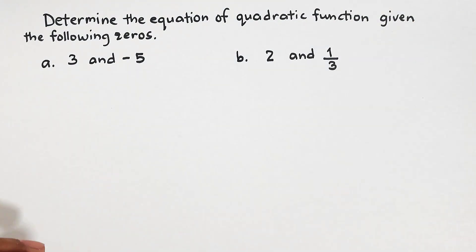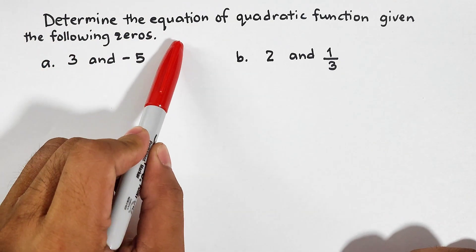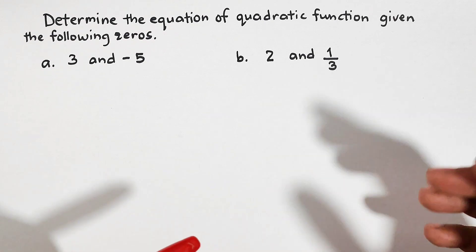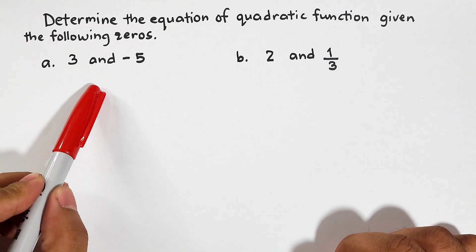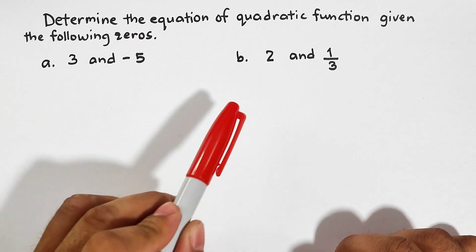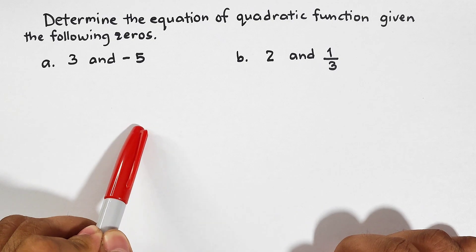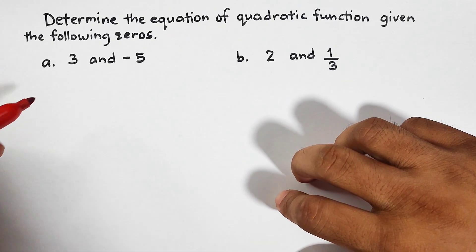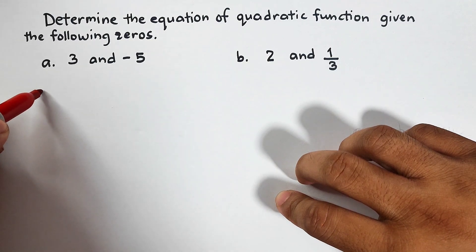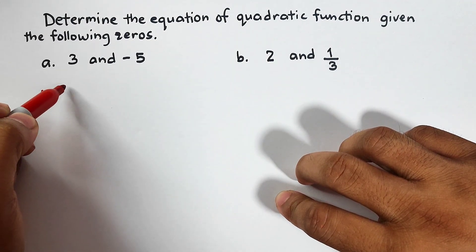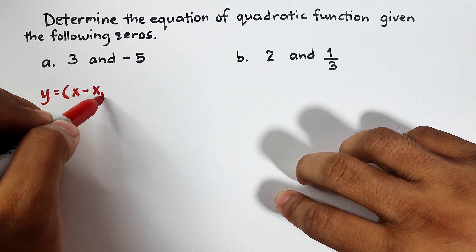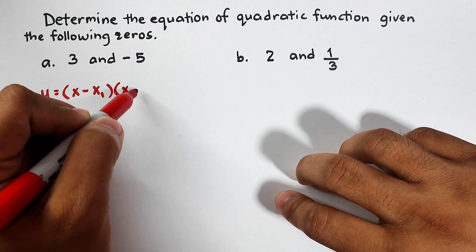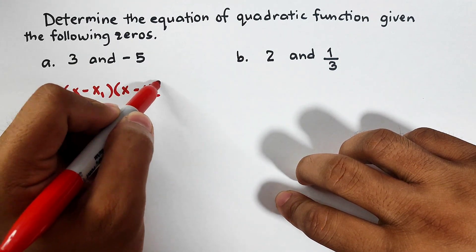So what we have here are examples that we need to determine the equation of quadratic function given the following zeros. By the way guys, let me explain that these zeros are the x-intercepts of the quadratic function. And the formula to get the zeros of the quadratic function is that we need to use y equals the quantity of x minus x sub 1 times x minus x sub 2.